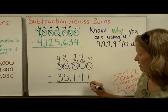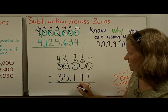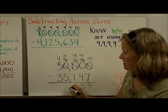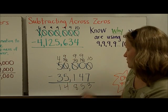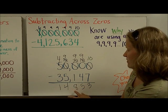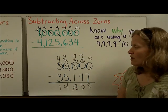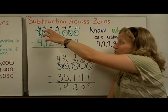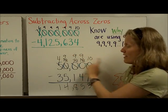And now I'm ready to do my subtraction. Ten minus seven is three. Nine minus four is five. Nine minus one is eight. Nine minus five is four. And four minus three is one. Let me go back and check each one of those. Yes. So I want you to, if you decide to use this shortcut, make sure you are remembering why that makes sense.